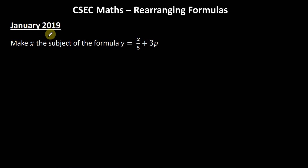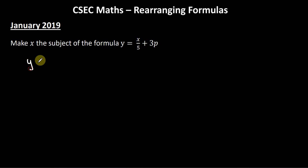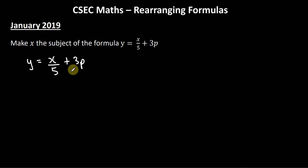Now looking at the question given on the January 2019 paper. Make x the subject of the formula: y = x/5 + 3p. To get rid of 3p, I do the opposite of adding 3p, which is to subtract 3p from both sides. Of course, 3p − 3p = 0.